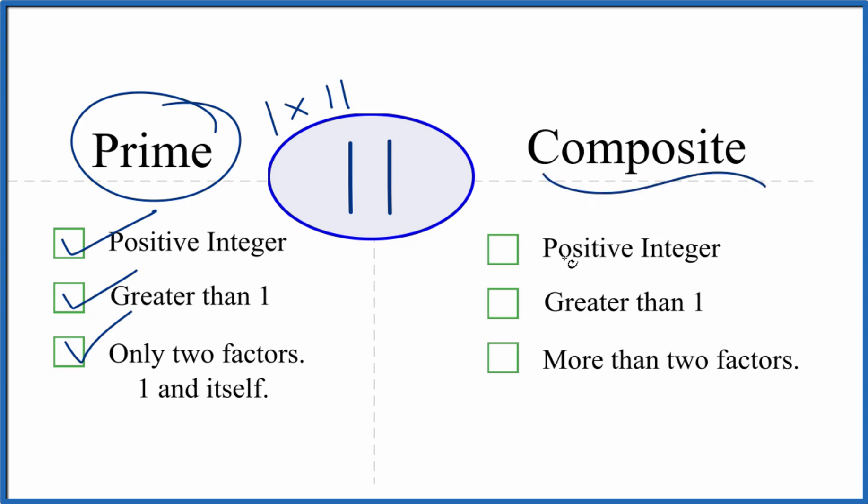But is it a composite number? Because we have a positive integer, it's greater than 1. But are there more than two factors that go evenly into 11? We just said there are only two factors. That means 11 is not composite.